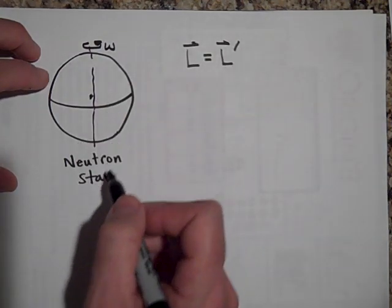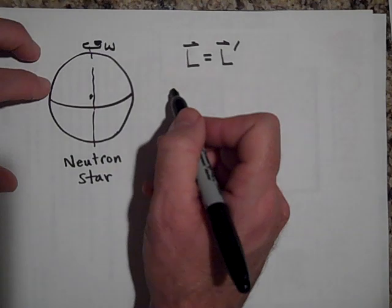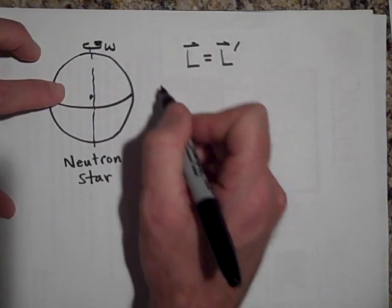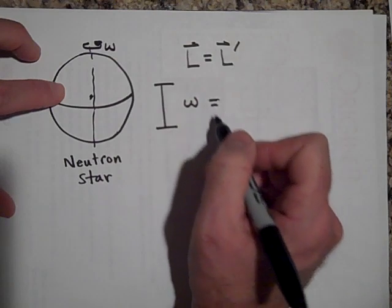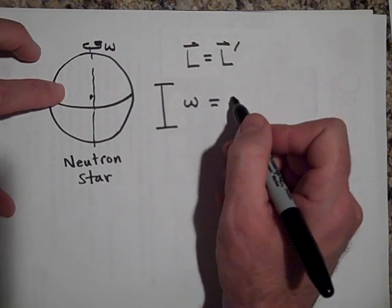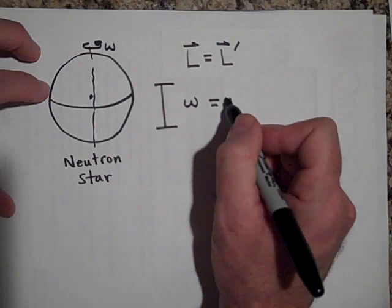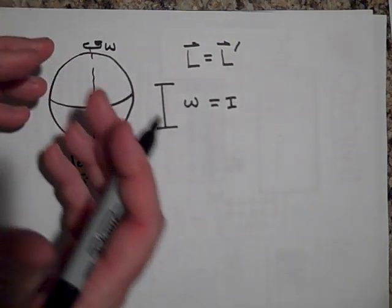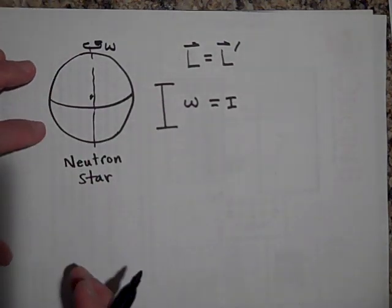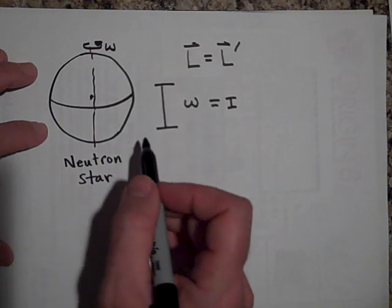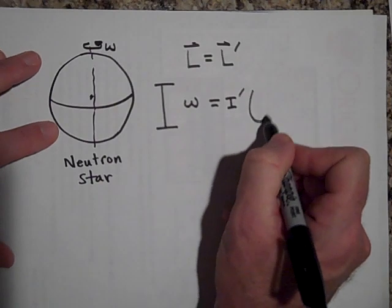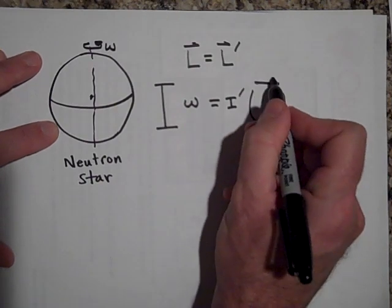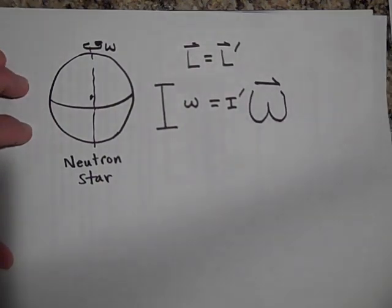And the rotational inertia at the beginning is actually huge and their omega might be small, but afterwards their I becomes real small because that all shrinks down. You'll do a problem on neutron stars in the book. And then their omega goes way up. The rate at which they spin goes way up.